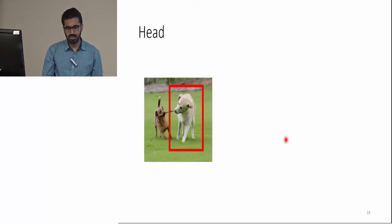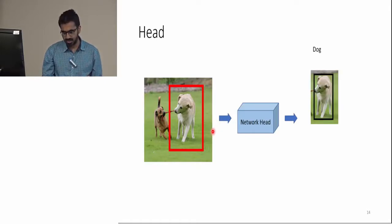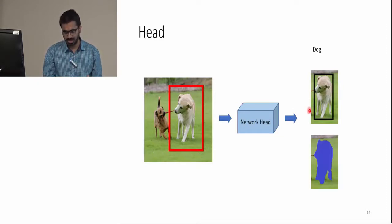Now we'll discuss the network head. For a given image, the red box is the proposed ROI by the RPN. Now it's the job of the network head to classify it, to predict a tight bounding box around the object, and to predict a segmentation mask.